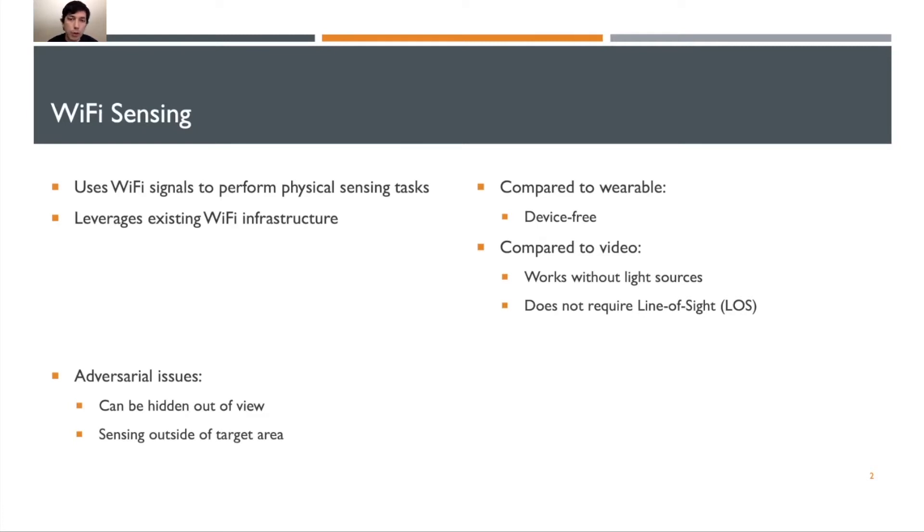Most importantly for our work, the signals are affected in some way by the physical movements and actions of different humans in the environment. This area of research has become particularly popular because it can leverage existing Wi-Fi infrastructure, which we already have deployed in our homes and offices.